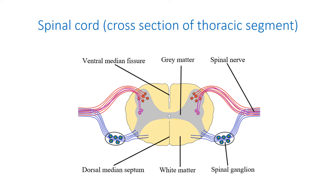In the center of the gray matter the central canal is located. It is lined with ependymocytes and filled with cerebrospinal fluid. Gray matter is formed by the bodies and processes of multipolar neurons, neuroglia cells, and blood vessels. The ventral horns contain the motor neurons that send axons via the ventral roots and the spinal nerves to striated muscles. The lateral horns contain the preganglionic sympathetic motor neurons that send axons to the paravertebral ganglia.